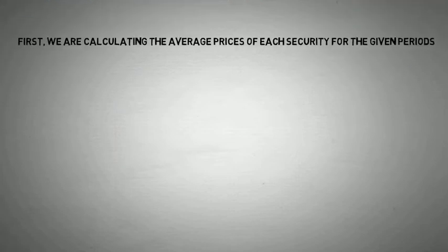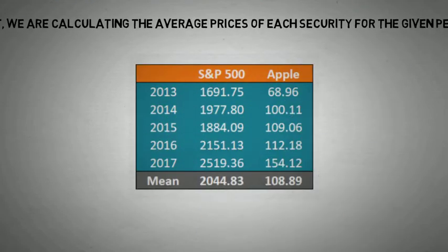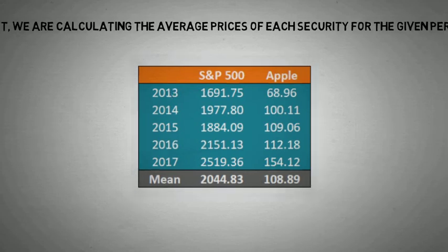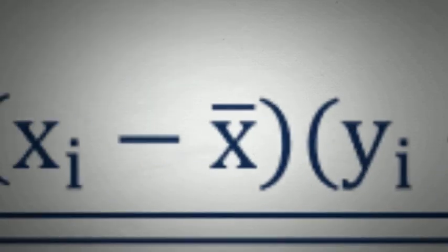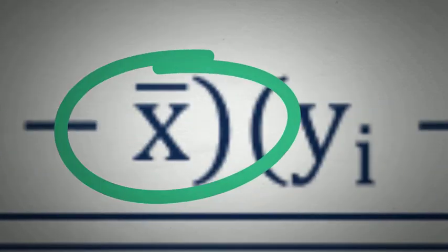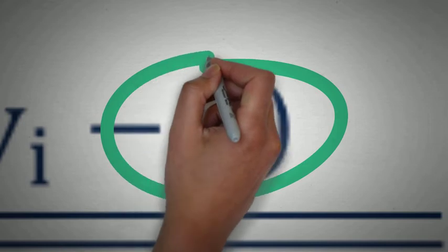To find the coefficient, Swetha gathers the following prices for the last 5 years. So now as a first step we are calculating the mean for S&P 500 and Apple. We are doing it because in our formula we have x bar and y bar, which in our example denotes the mean of x, that is S&P 500, and y, that is Apple.